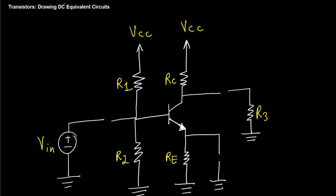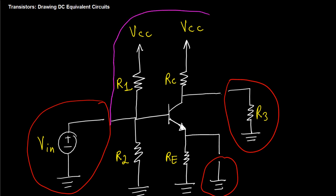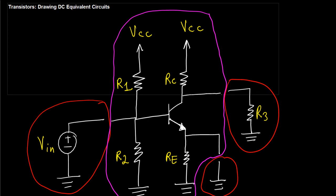Now notice that this part of the circuit, this part, and this part are disconnected from this part. That means I don't need those anymore.